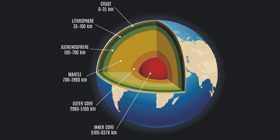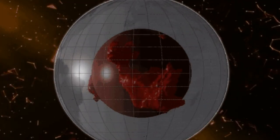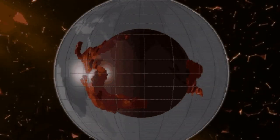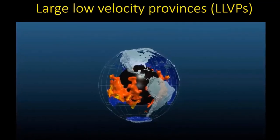There are two massive blob-like structures within the mantle, roughly on opposite sides of the planet. The blobs, more formally referred to as Large Low Shear Velocity Provinces, or LLVPs,